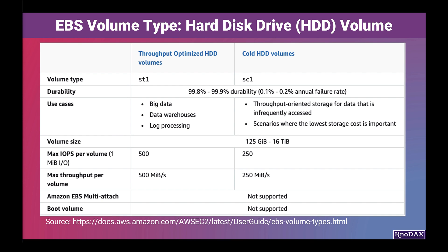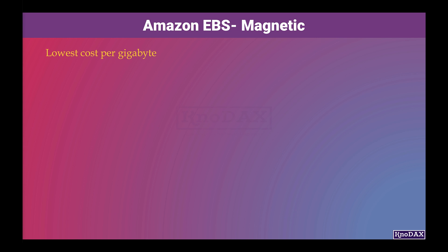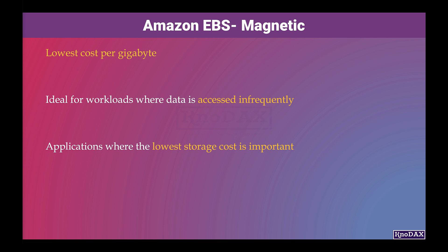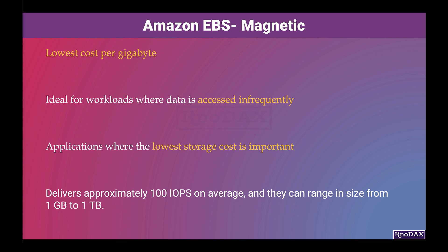Though both HDD and SSD provide ample storage capacity, SSD volumes provide better performance than HDD volumes in most aspects. However, SSDs are relatively more expensive than HDDs. Magnetic volumes are previous-generation volumes backed by magnetic drives, providing the lowest cost per GB of all EBS volume types. They are ideal for workloads where data is not accessed frequently and the lowest storage cost is important. Magnetic volumes deliver approximately 100 IOPS on average and range in size from 1 GB to 1 TB.